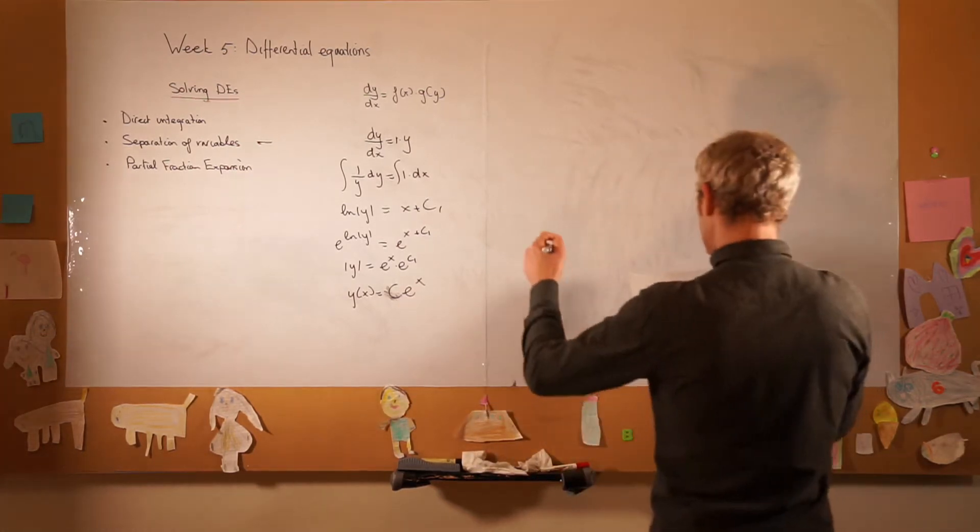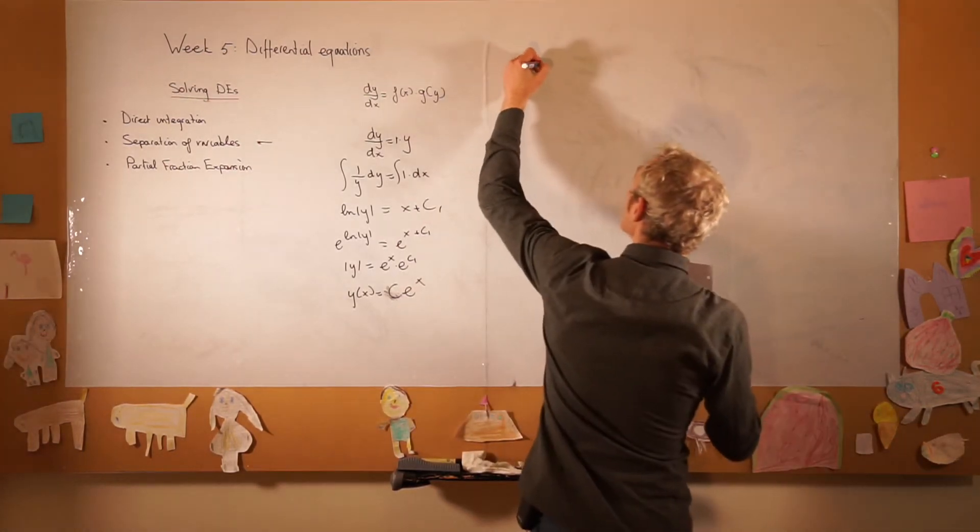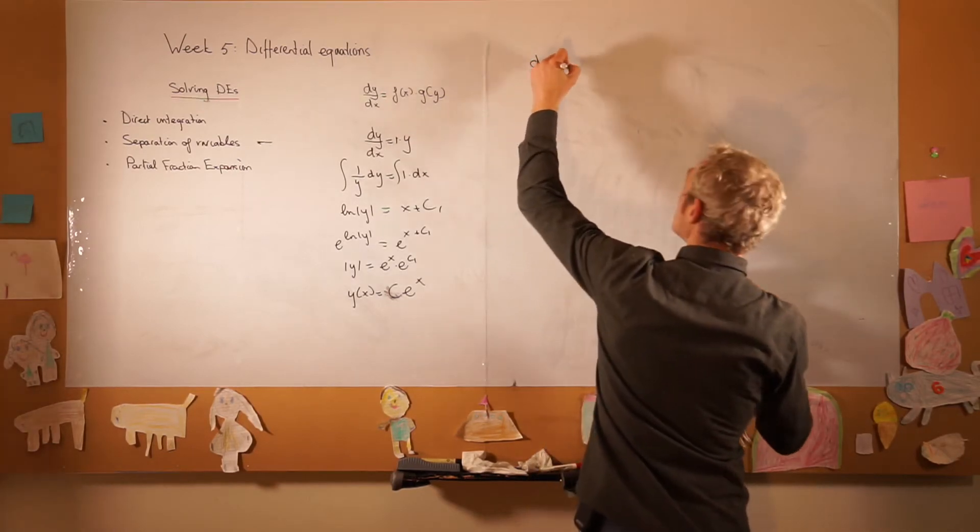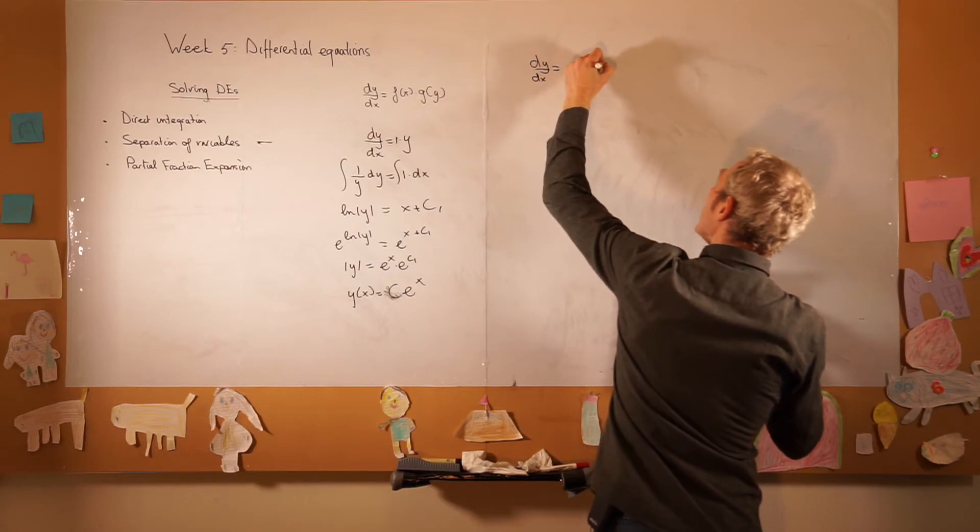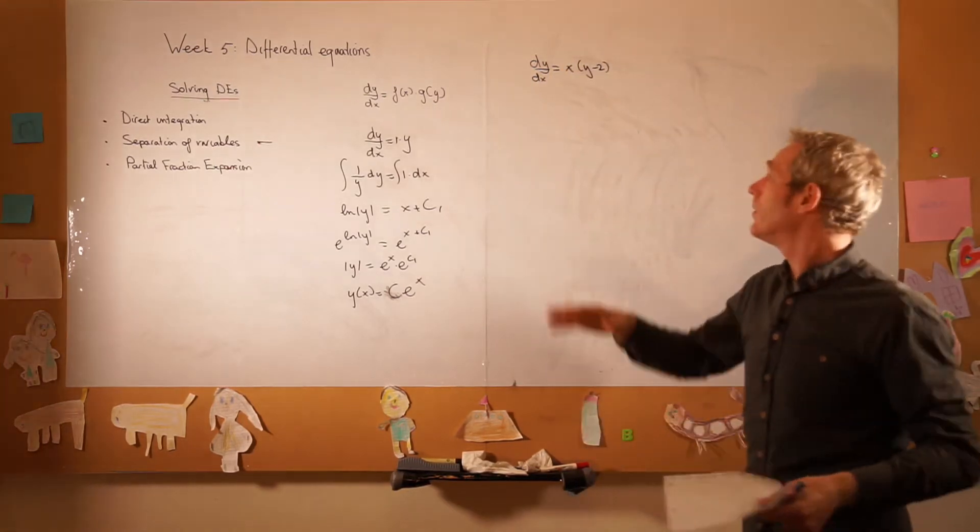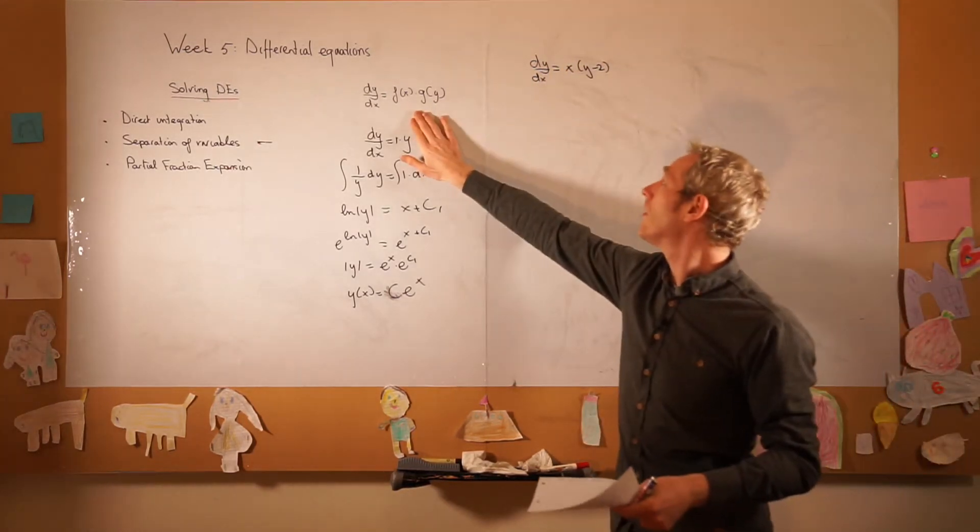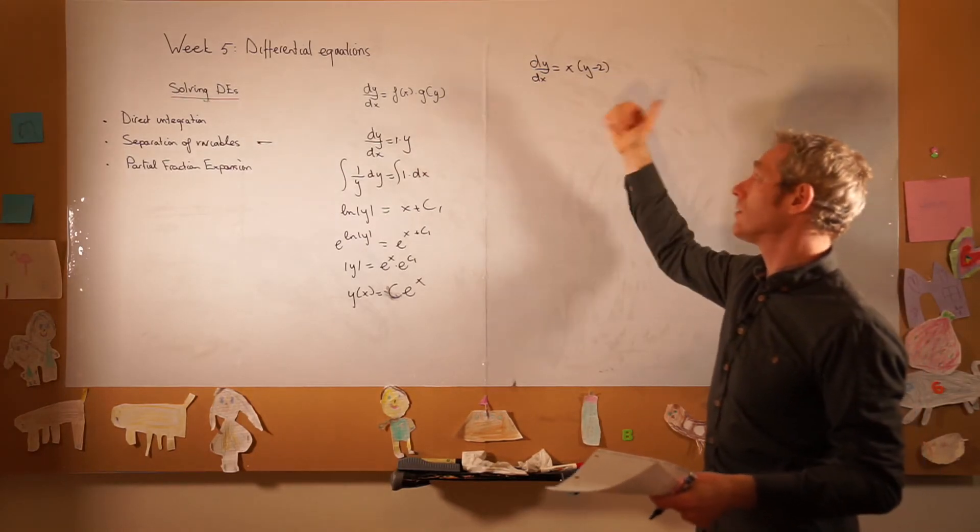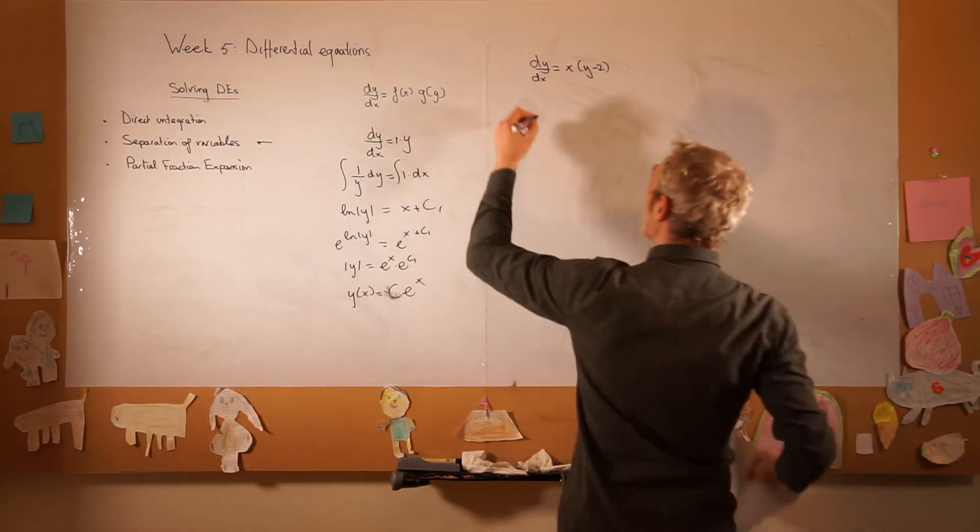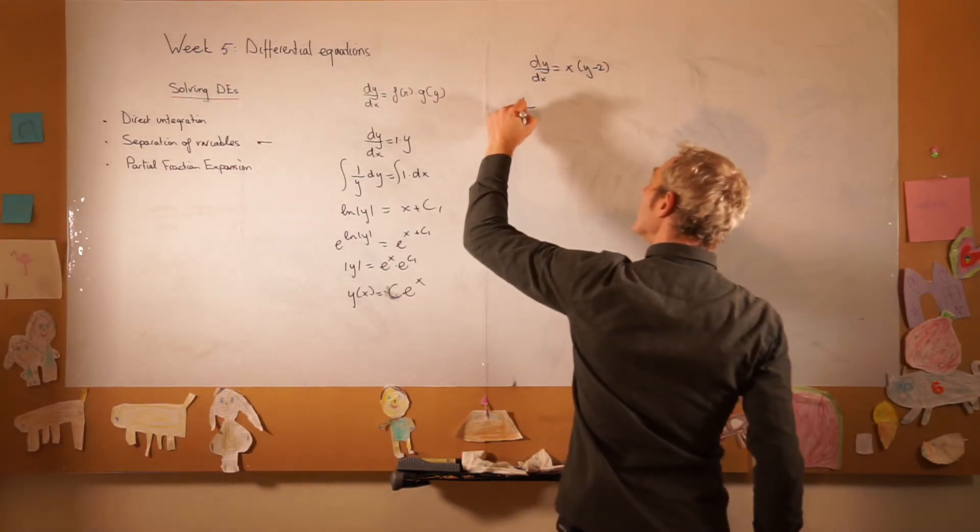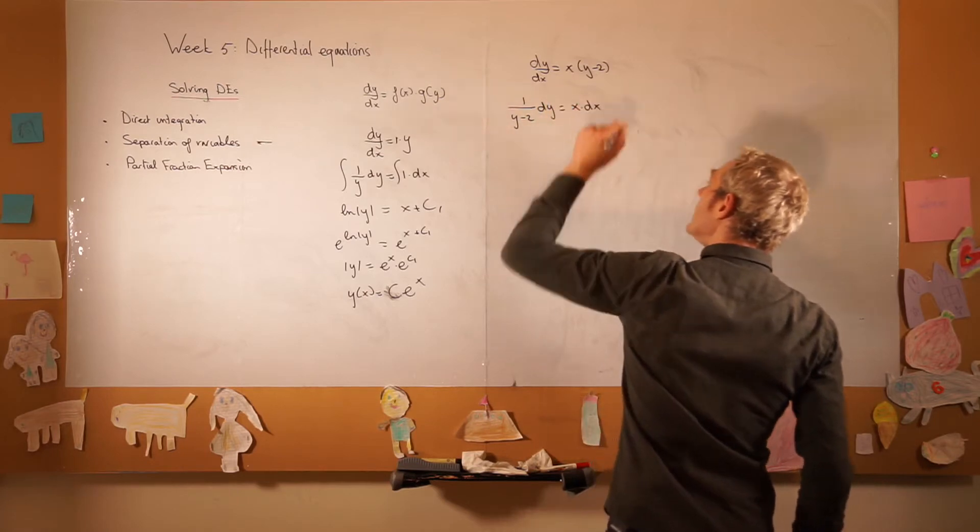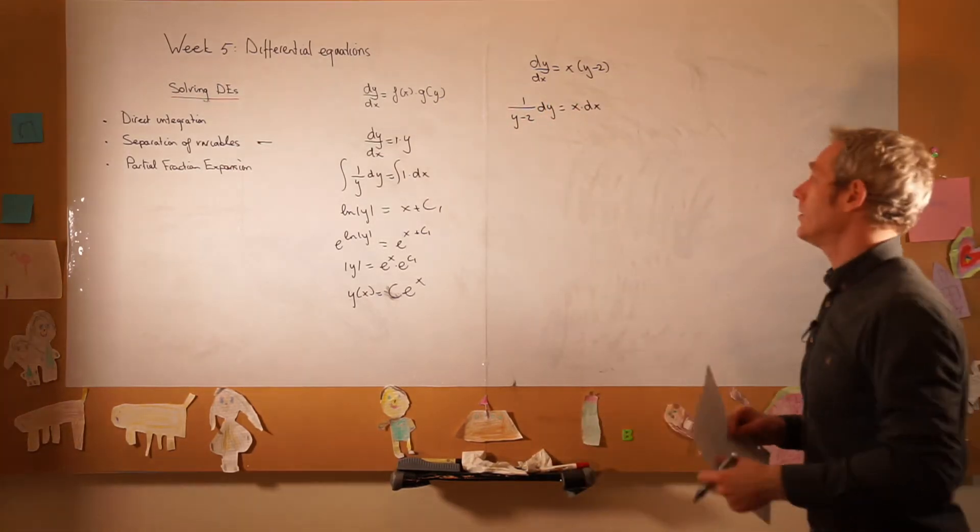Let's have another example. dy/dx is equal to x times (y minus 2), and here again we know that it fits this profile, so we can use separation of variables where everything with x goes to the right and everything with y goes to the left. So I have 1 over (y minus 2) dy is x times dx, and this is the separation of variable parts.